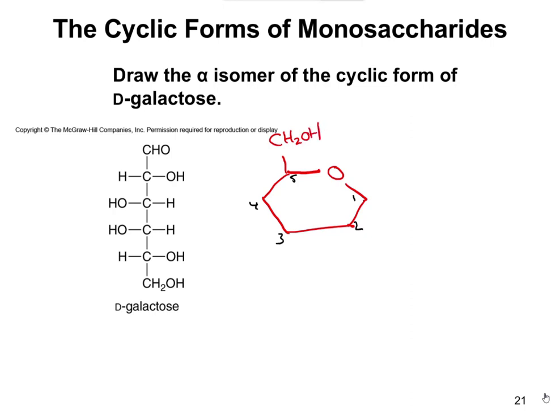If we number the linear structure, we have carbons 1, 2, 3, 4, 5, and 6. The O in our upper right-hand corner is the oxygen that's part of the ring — the important one that forms a bond with carbon 1.